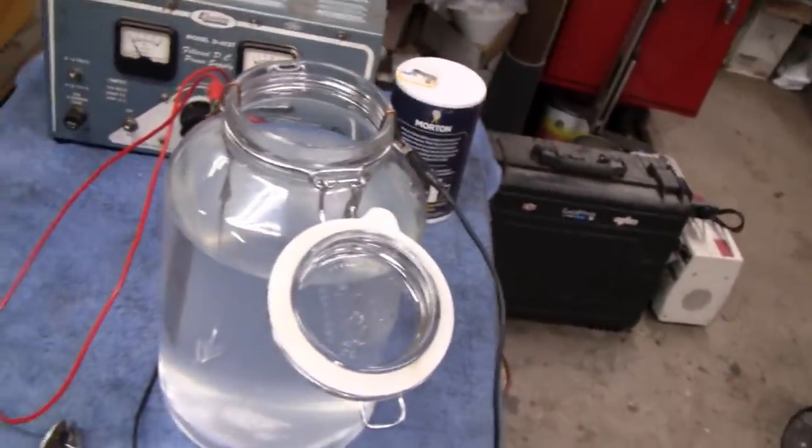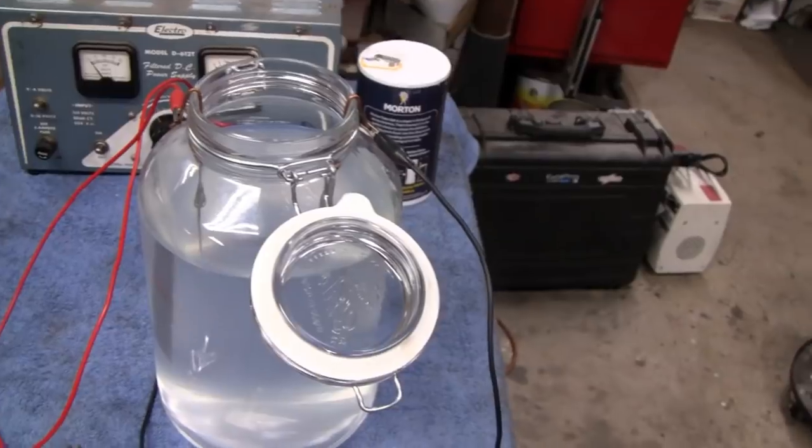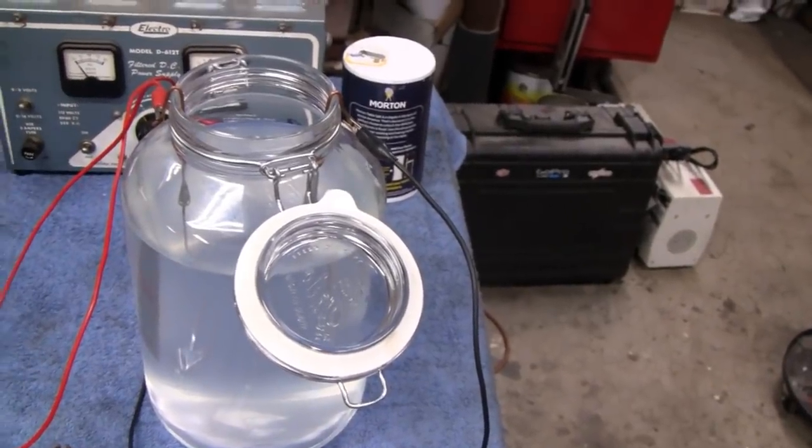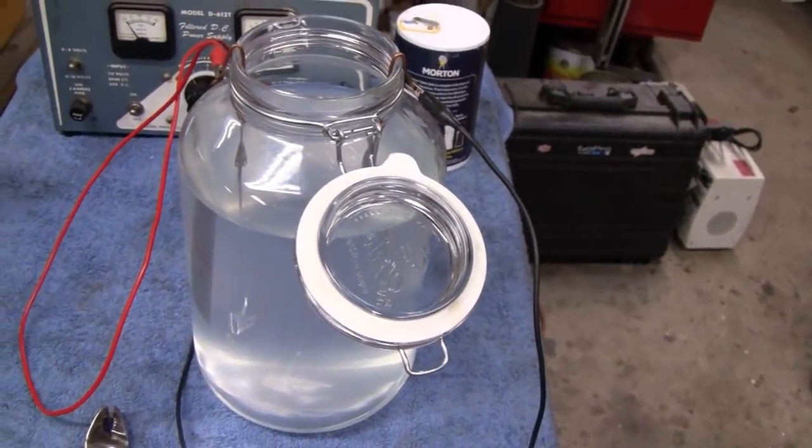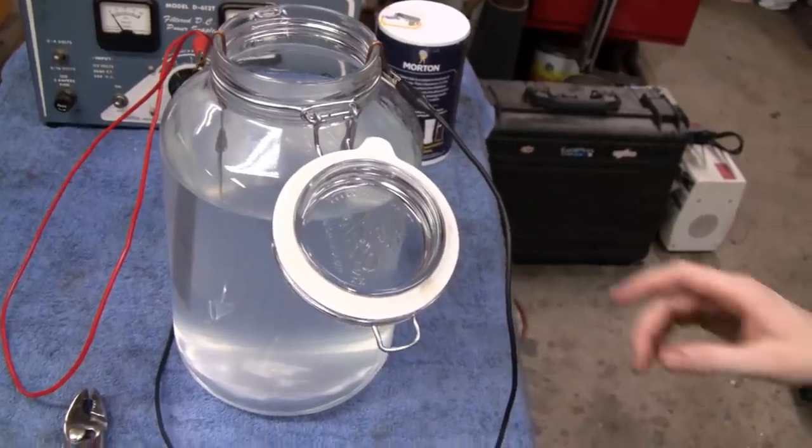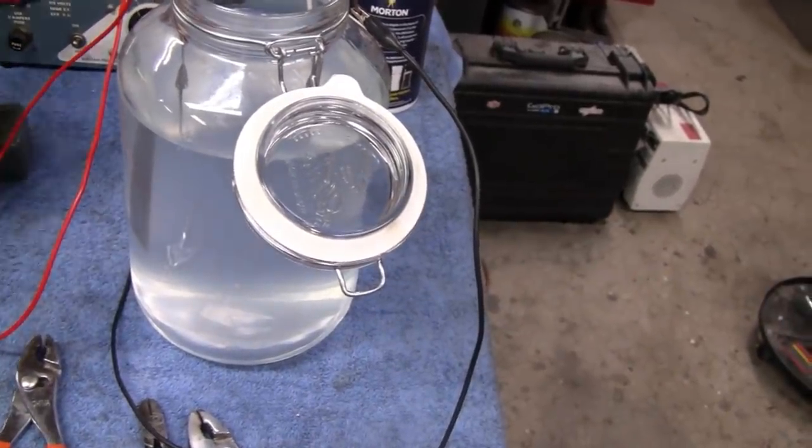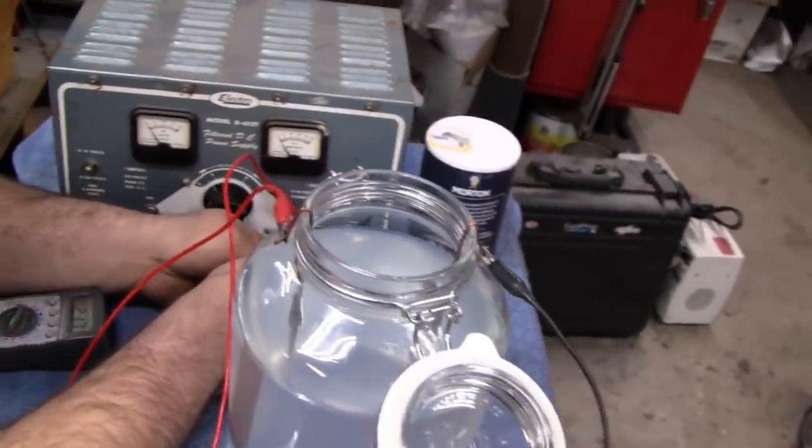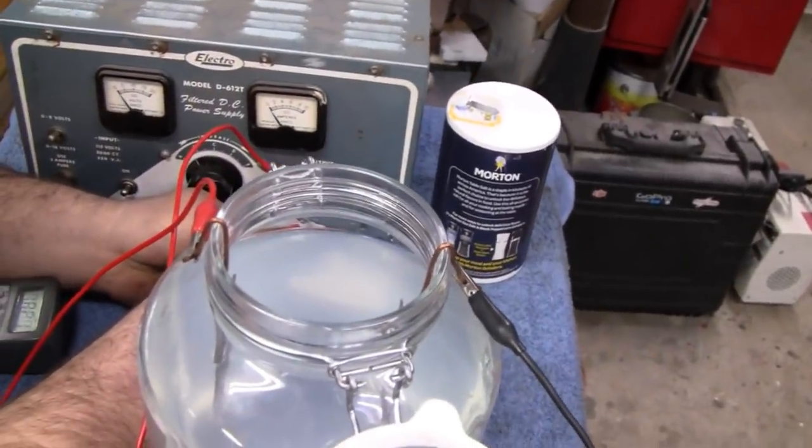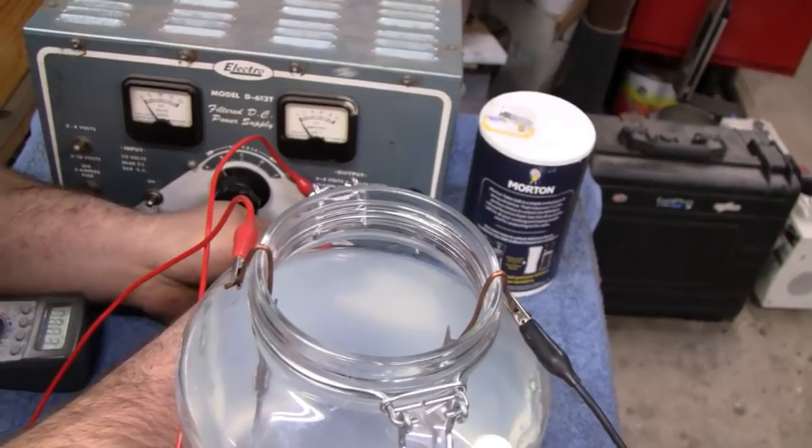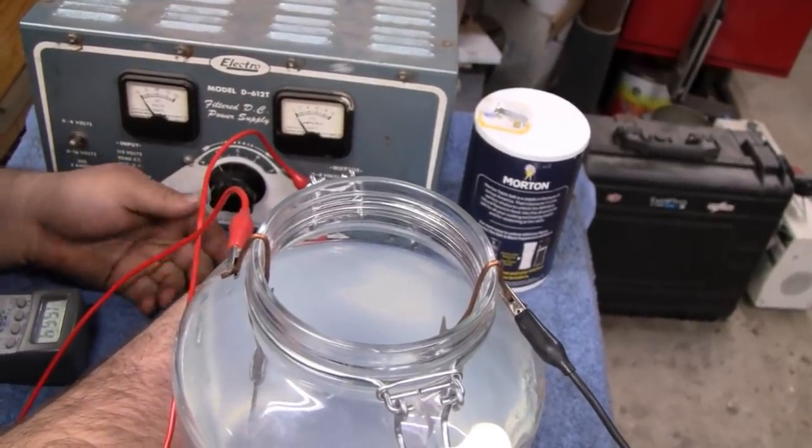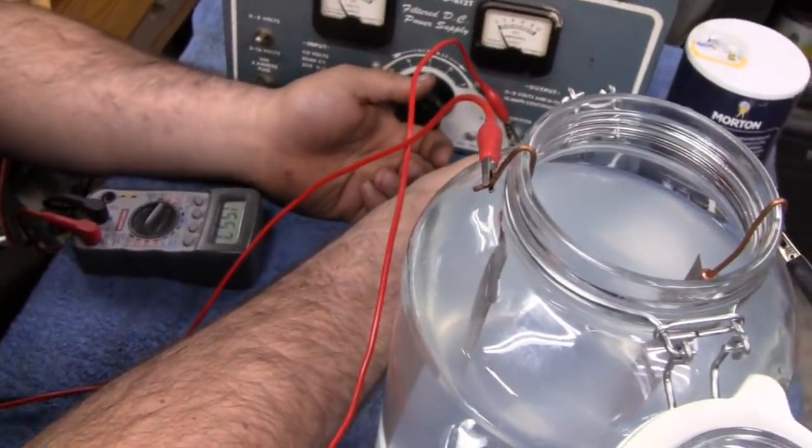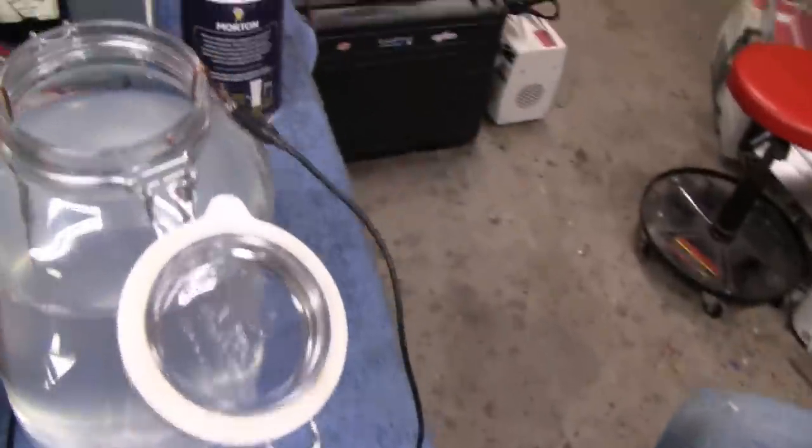Turn up the current. Yeah. I'd say it doesn't take much. Some people use a phone charger. Right. So this should be overkill. Yeah. It's doing something because I see bubbles forming on the... Let me see. Let's check over here. But you can't always go by these analog. Well, yeah. Right now I'm just gonna measure the voltage potential here. So we're at one and a half volts.